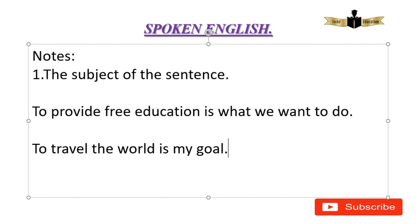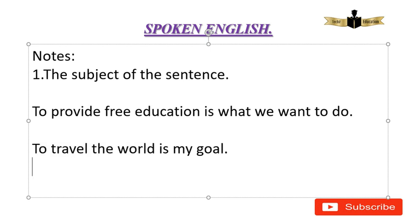So what do you think? In this sentence, 'to travel' is the infinitive phrase. 'Travel' is the infinitive verb, and 'world' is the object of the verb. So 'to travel the world' is the complete infinitive phrase, and this is the subject. If you want to write it, the sentence frame is S plus V plus C.